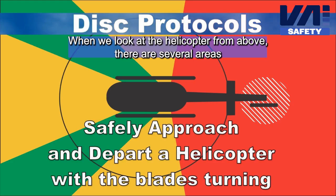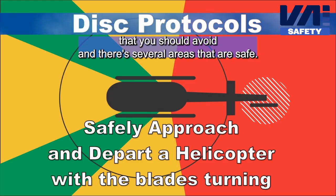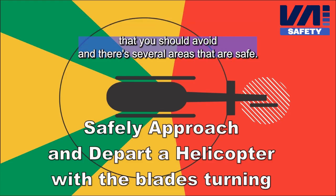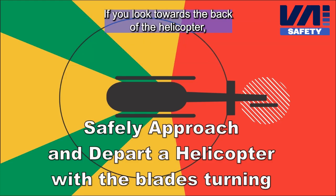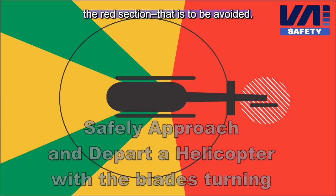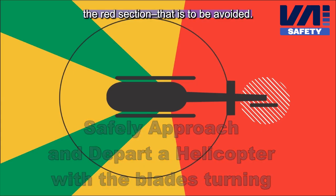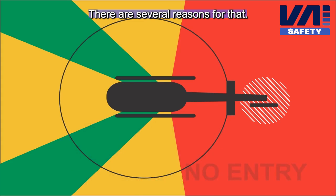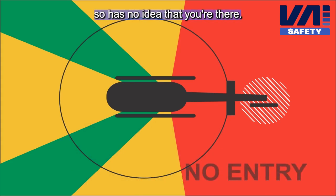When we look at the helicopter from above, there are several areas that you should avoid and several areas that are safe. If you look towards the back of the helicopter, the red section is to be avoided. There are several reasons for that. Firstly, the pilot cannot see you and has no idea that you're there.